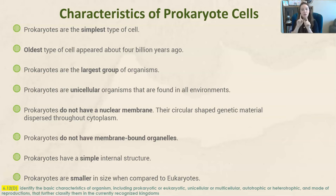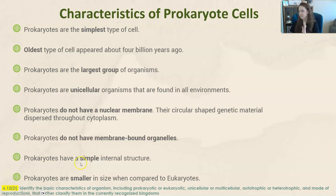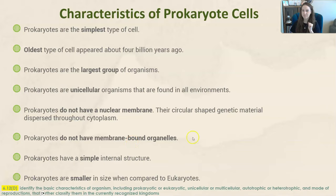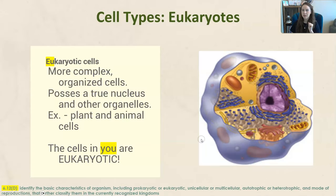Prokaryotes do not have membrane-bound organelles — again, they're floating around within the cell. They have a simple internal structure, not complex at all. Prokaryotes are also smaller in size when compared to the other cell type, eukaryotes.